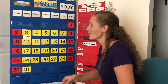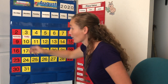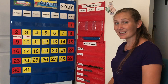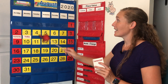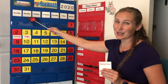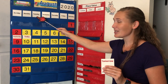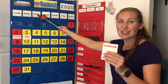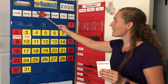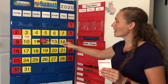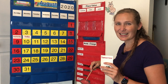Now, do you know what tomorrow will be? Today is Monday. What comes after Monday? Tuesday. So tomorrow will be Tuesday, August 11, 2020.